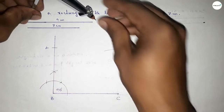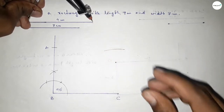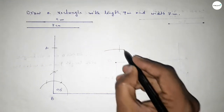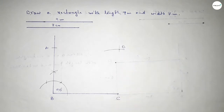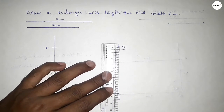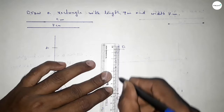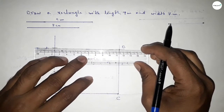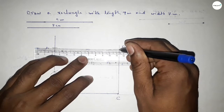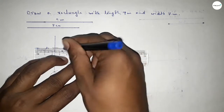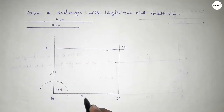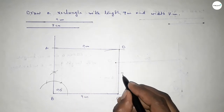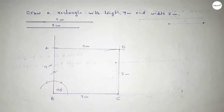Now taking the length 9 centimeters by using the compass and putting the compass here and cutting here, so both curves intersect at point D. Now joining C and D, then joining A and D to get the rectangle ABCD. This side is 9 cm, this side is 9 cm, this side is 7 cm, and this side is also 7 cm.